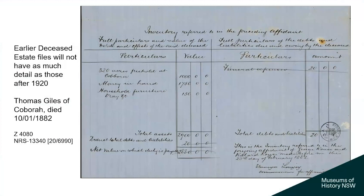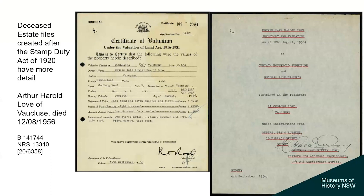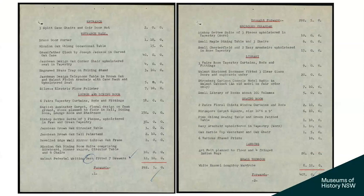Here we have one of the early ones where you get told that the person has 320 acres of land at Cobbara, money and household furniture and a dray worth £150 — but very little detail for Thomas Giles, who died in 1882. Whereas for Arthur Harold Love of Vaucluse, who died in 1956, we get much more detailed information. You get a certificate of valuation giving details like lot, description of the house — two storey house, nine rooms, kitchen and offices, tile roof, brick garage, tile roof — and a detailed list of household furniture. For example: Jacobean brown oak circular table, three pounds; Jacobean brown oak tall-palms stand, two pounds ten. I can't understand why a small library of a hundred volumes is only worth five pounds, whereas the chintz window curtains with rods are two pounds ten.